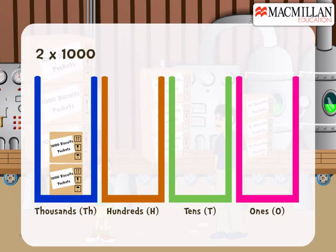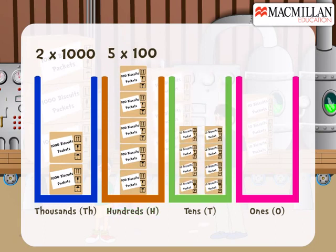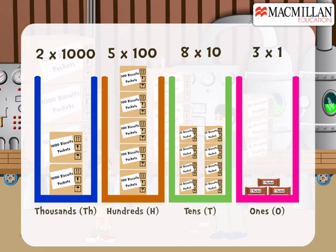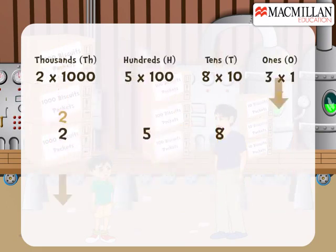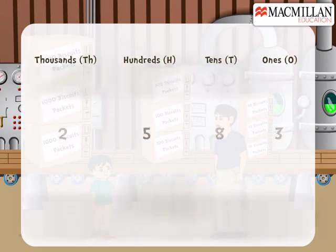Oh, place value! If there are two cartons of one thousand packets, we put them at the thousands place. If there are five cartons containing one hundred packets, we put them at the hundreds place. Suppose there are eight cartons containing ten packets — we put those at the tens place. And if there are three biscuit packets left without any carton, we put them at the ones place. So the total number of packets is two thousand five hundred and eighty-three.